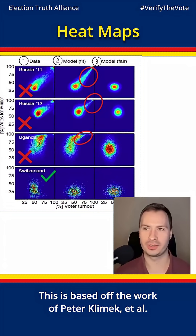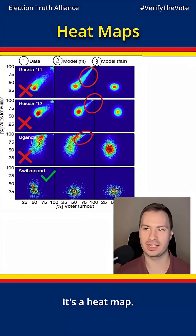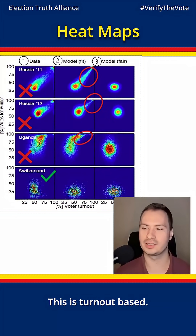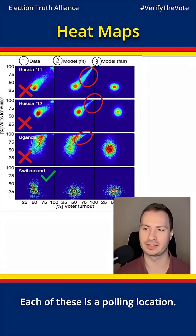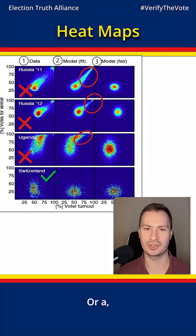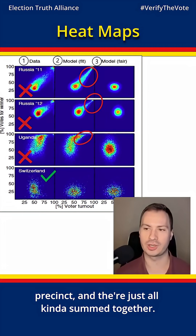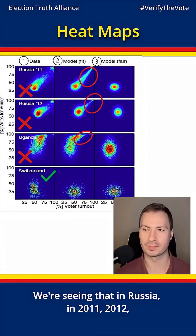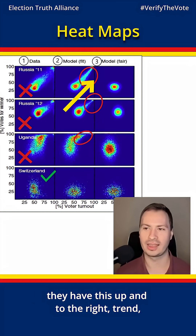This is based off the work of Peter Klimek et al. It's a heat map — the way you read these is turnout-based. Each of these is a polling location or a precinct, and they're all summed together. A normal election should look more circular.